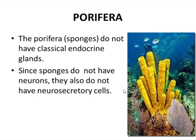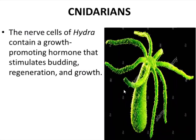The next group is the cnidarians. Cnidarians have nerve cells. Cnidarians such as Hydra contain a growth-promoting hormone that stimulates budding, regeneration, and growth. This hormone is responsible for regeneration and budding. We know that Hydra reproduces by budding, and if part of it is lost, it is regenerated by means of this hormone.